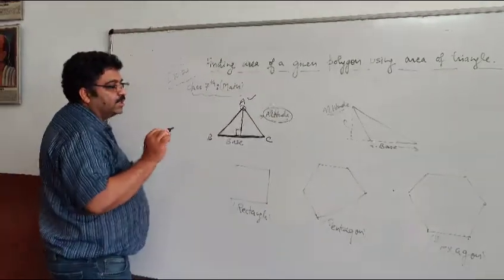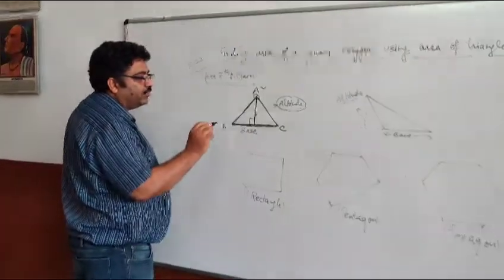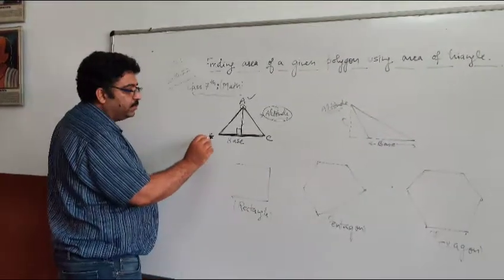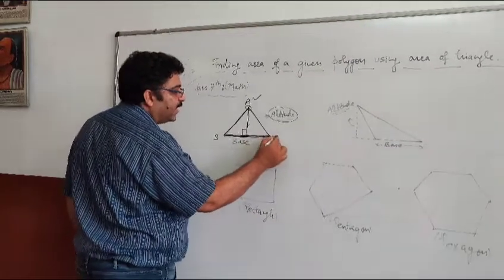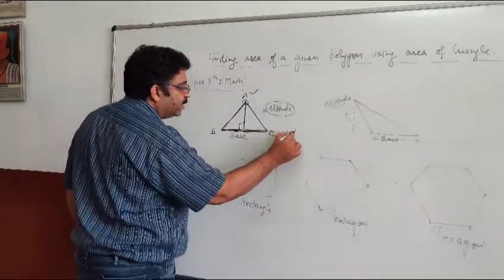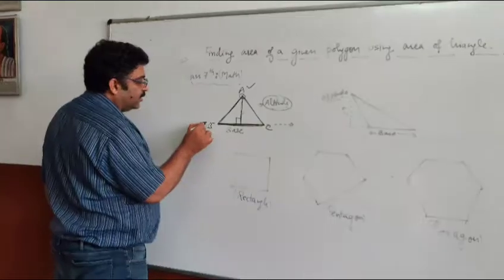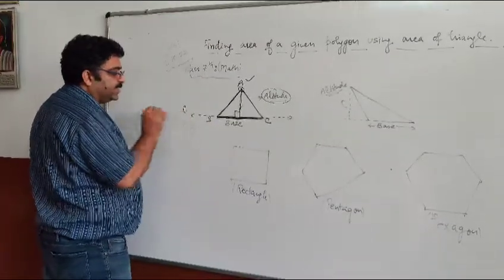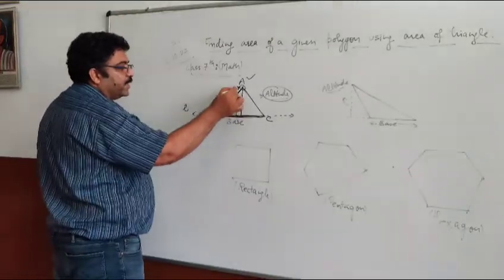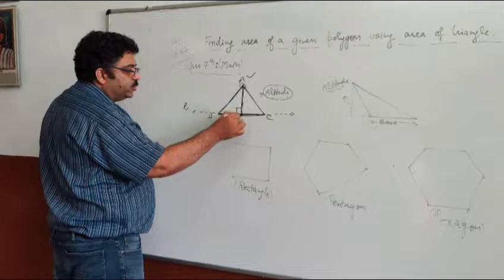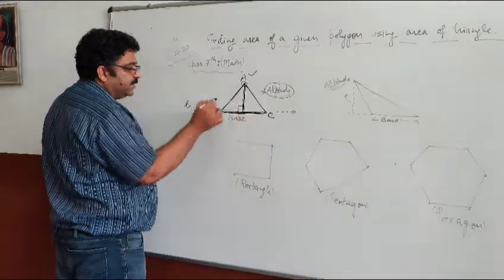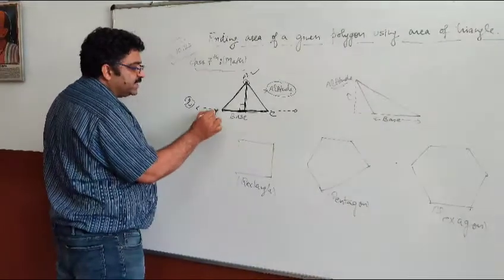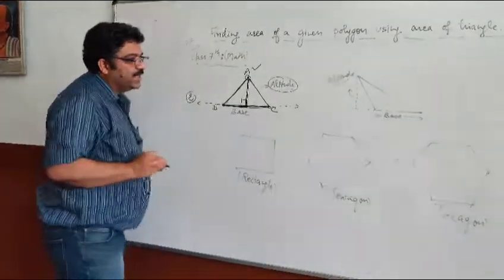The altitude will be drawn not just to the base, but rather to the line containing the base. So this is the line — let us say this is line L. This altitude is drawn to the line which is containing this base.